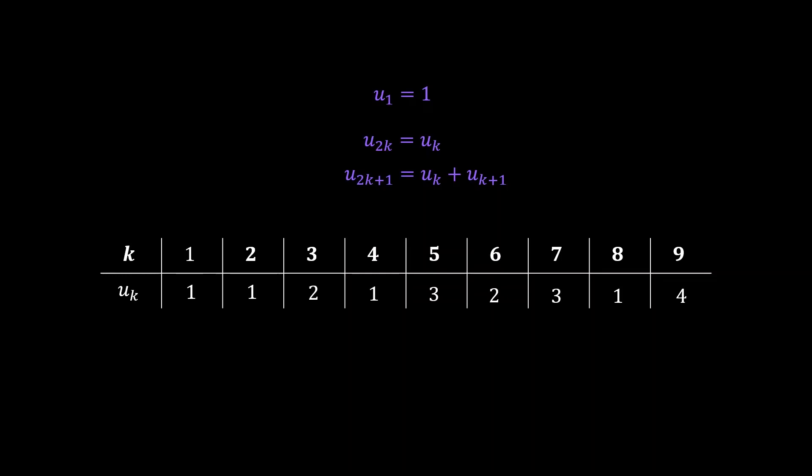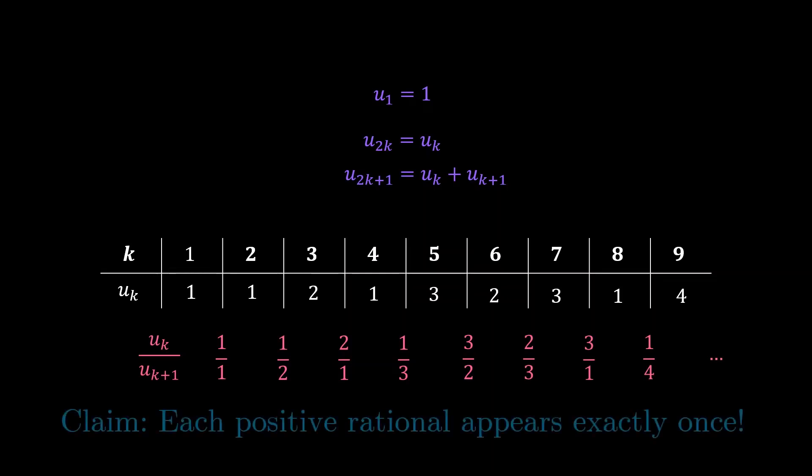A crazy looking sequence. And what is even crazier is if you consider taking the ratio of successive terms, you get a sequence of rational numbers. And the crazy fact is that each positive rational number actually appears exactly once in this sequence. Sounds crazy?